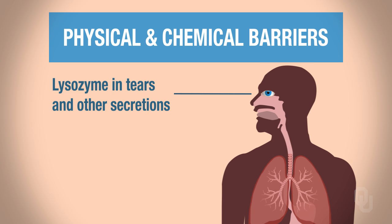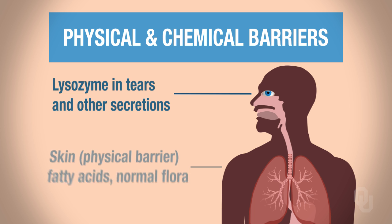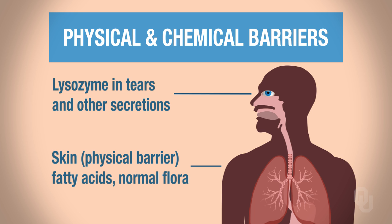The first physical/chemical barrier to discuss is lysozymes — found in tears and other secretions. These are not lysosomes; lysozymes are antibacterial. When you cry, you're actually killing bacteria on your skin. The skin itself is a physical barrier; it also has fatty acids and normal flora that affect pH, and some foreign invaders cannot survive on the skin because of that normal flora.